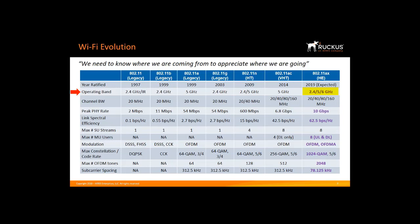One big factor in this is the proliferation of 2.4 GHz IoT devices that are coming on the market today. Also, the FCC in the United States is opening the 6 GHz unlicensed spectrum for Wi-Fi. 11ax will be the first standard that will be applicable for 6 GHz as well.